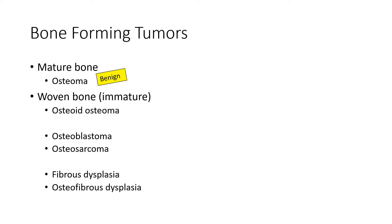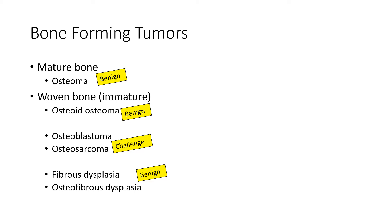Osteomas you're never going to mistake for an osteosarcoma — that's an easy diagnosis. Osteoid osteoma, not going to confuse that with an osteosarcoma. Now, fibrous dysplasia and osteofibrous dysplasia are traditionally not classified as bone-forming tumors, but they do have a fair amount of bone, so I've placed them there. Osteosarcoma is obviously malignant, osteoblastoma is benign, and there is often a great challenge in distinguishing some osteoblastomas from osteosarcomas — that's really the heart of this talk.